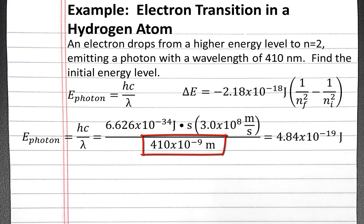And notice, for our units to cancel, we have to convert our wavelength from nanometers into meters. When we plug this into our calculator, we should get 4.84 times 10 to the negative 19th joules.